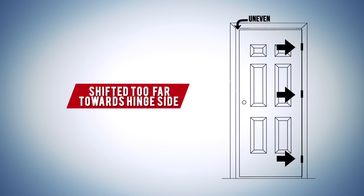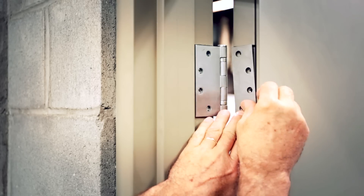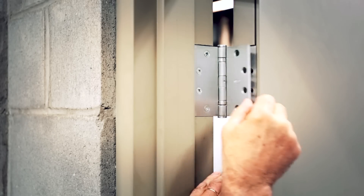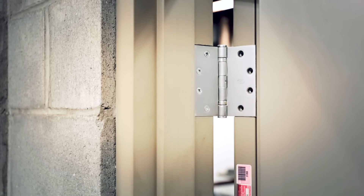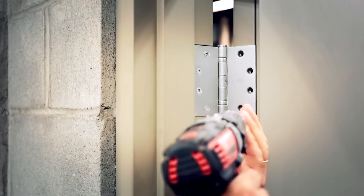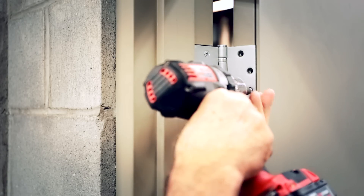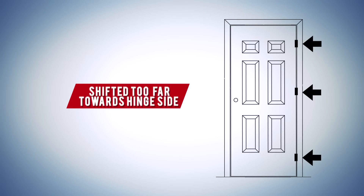When the door has shifted too far towards the hinge side of the opening, place the shims between the hinge leaf and door at all hinge locations. This will shift the door towards the lock side.